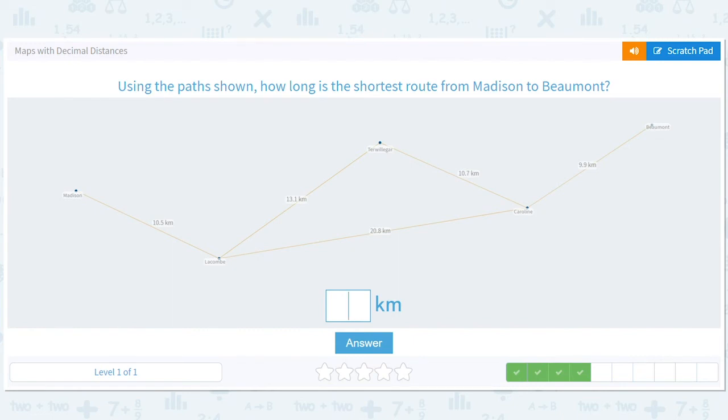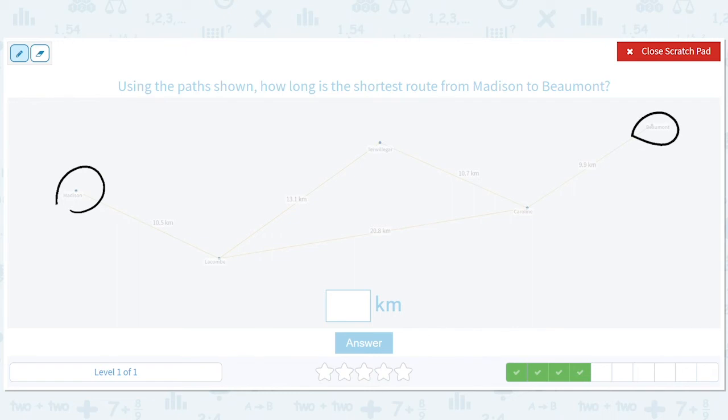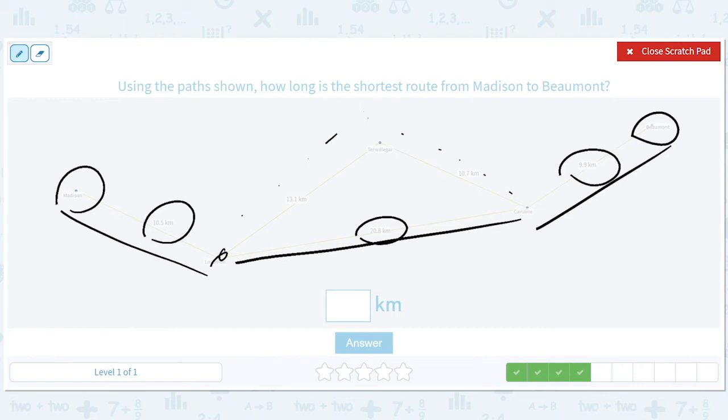Look at this, interesting. It looks almost like a constellation. Using the path shown, how long is the shortest route from Madison to Beaumont? We're tempted to, well, let's just think logically here. You go from Madison. You only have one choice. You have to go to Lacombe. Now you're here. What's the shortest distance between two points? Could it possibly be this? Absolutely not. There's only one way to get from Lacombe to Caroline. It's got to be this way. And then there's only one way to get from Caroline to Beaumont. So it's going to be these three things added up. 10.5, 20.8, 9.9. Let's add these two together. 10.5 plus 20.8 is 31.3. And then 31.3 plus 9.9 is 41.2.